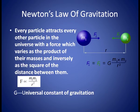He had deduced from Kepler's laws that the force between the sun and planets varies as 1 by r square. Using this result, he was able to show that it is the same force that keeps the moon in its orbit around the earth. Then he generalized the idea to formulate the universal law of gravitation, also known as Newton's law of gravitation. This law states that every particle attracts every other particle in the universe with a force which varies as the product of their masses and inversely as the square of the distance between them.